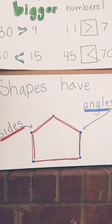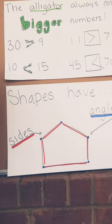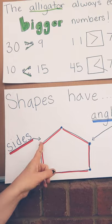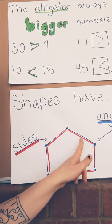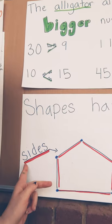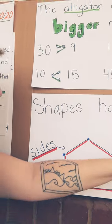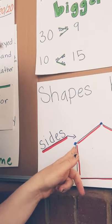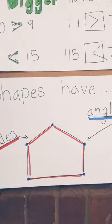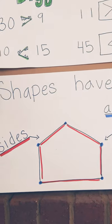Alright, so shapes have two things that first graders need to know about. Shapes have sides, and shapes have angles. So sides are these big, long lines of the shapes. They're kind of like the walls of the shape. Sides. Angles are the points where these sides meet.